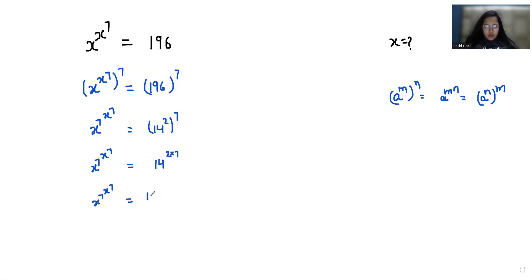Now if we compare both sides, x power 7 equals 14. If we multiply with power 1 by 7, so x equals 7th root 14.